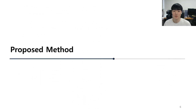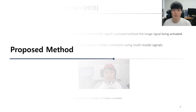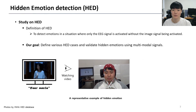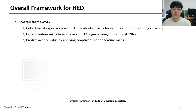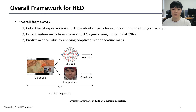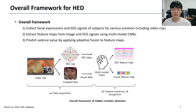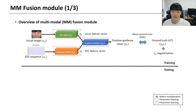Let's move to the proposed method. Our goal is to define various HED cases and validate hidden emotions using multimodal signals. The overall framework consists of three steps. In the training phase, 2D CNN for visual image and LSTM for EEG sequence is frozen, and only parameters of the fusion module are learned to minimize the ground truth and emotion guidance value, which is the output of the fusion module.